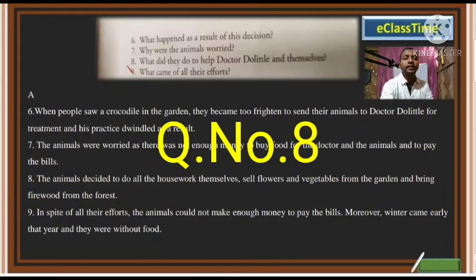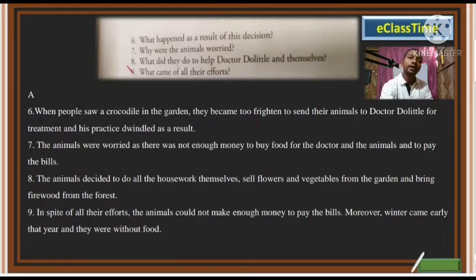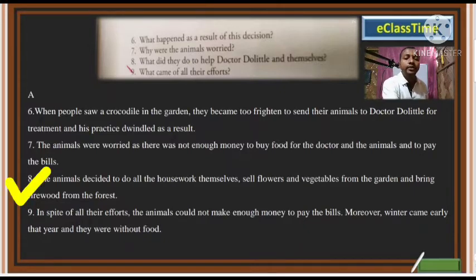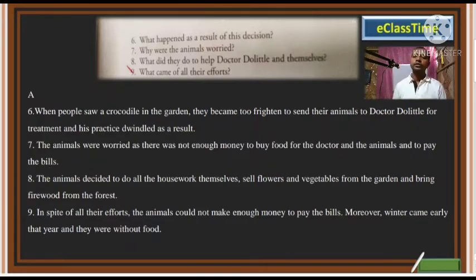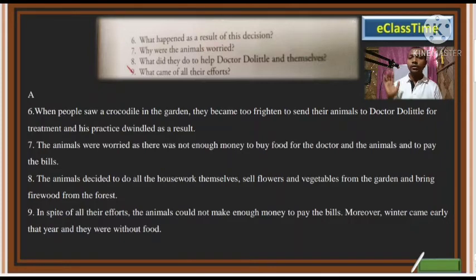The next question is: What did the animals do to help Dr. Dolittle and themselves? The animals decided to do all the household work themselves — sell flowers and vegetables from the garden, and bring firewood from the forest. The monkey said he would do the cooking, the dog said he would clean the house, and they all wanted to do their own share of the work.